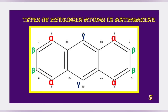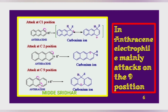In anthracene, three types of positions can be observed. The 1, 4, 5, and 8 positions are also called alpha positions. The 2, 3, 6, and 7 positions are also called beta positions. The 9 and 10 positions are also called gamma positions. As anthracene is an aromatic compound, it mainly shows electrophilic substitution reactions.